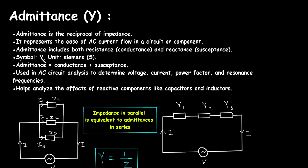The symbol for admittance is capital Y and its unit is Siemens, represented by capital S. Conductance is 1/R and susceptance is 1/X. Conductance is represented by G and susceptance by B. Admittance is used in AC circuit analysis to determine voltage, current, power factor, and resonance frequencies. It also helps to analyze the effects of reactive components like capacitors and inductors.